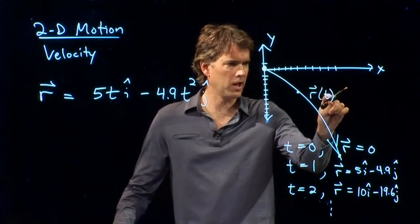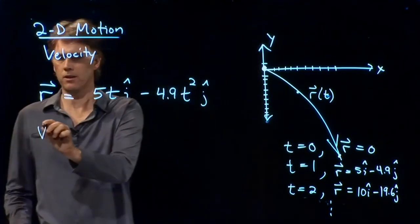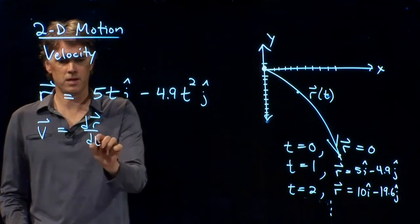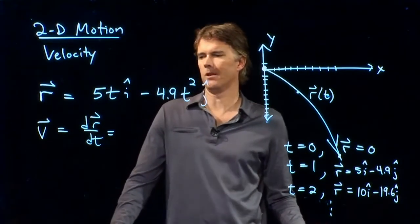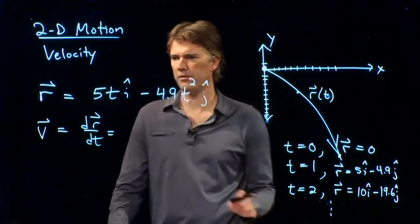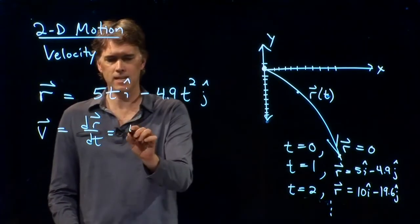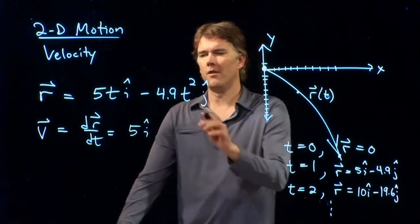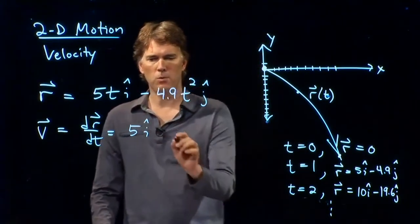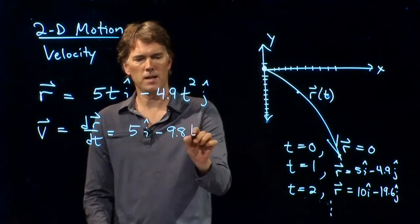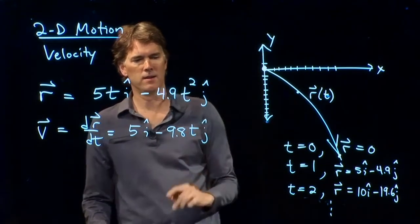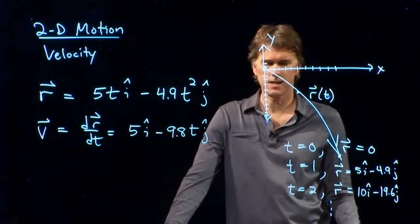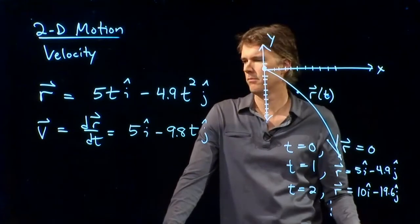Let's see if we can figure out what the velocity is doing. Velocity is, of course, the derivative. dR dt. And now we can do that, right? That's just a derivative of this thing. What do we get? Derivative of 5t is just 5. Derivative of 4.9t squared is minus 9.8t j-hat. Okay.